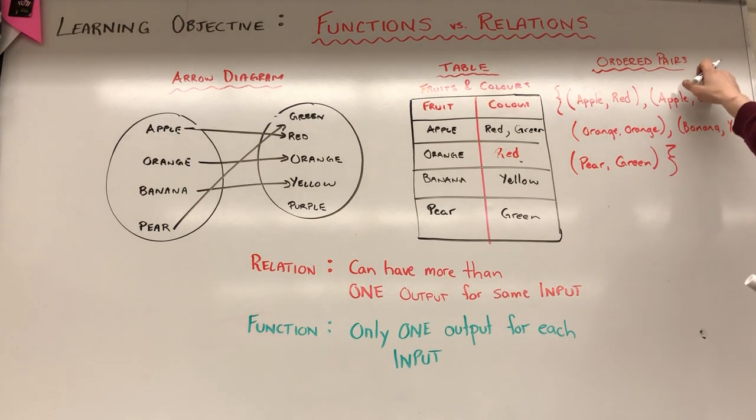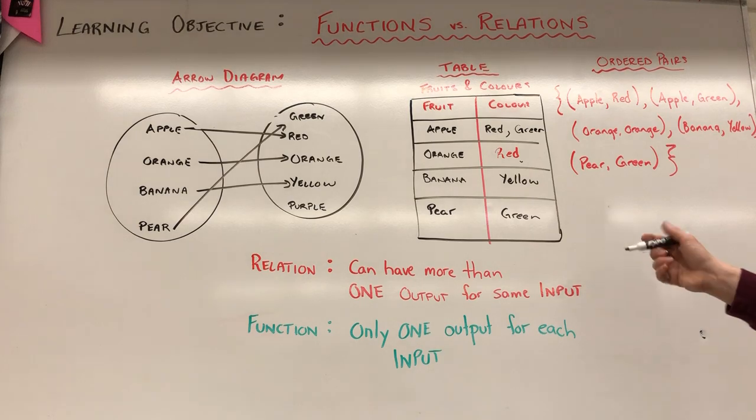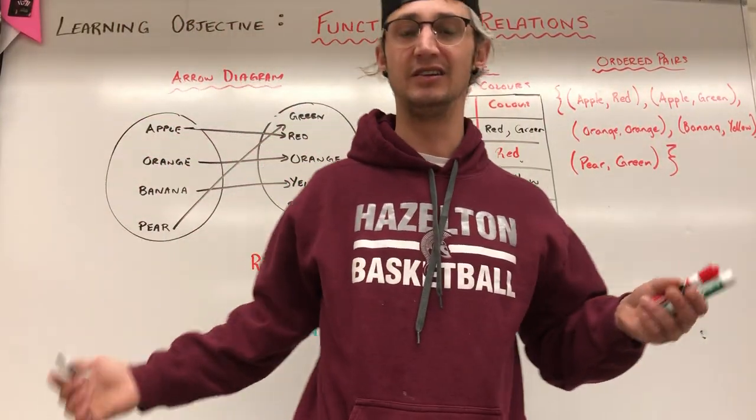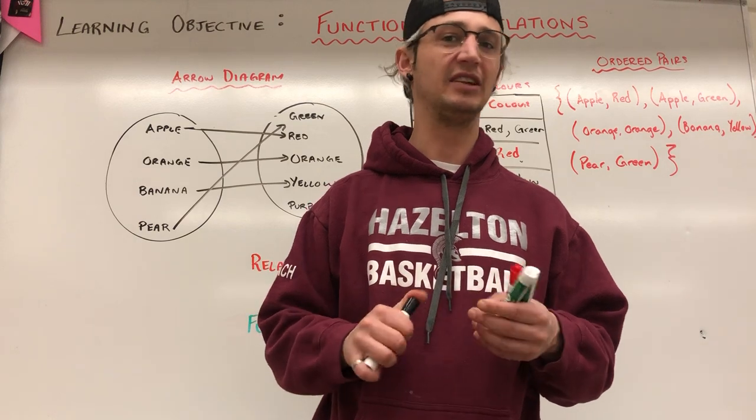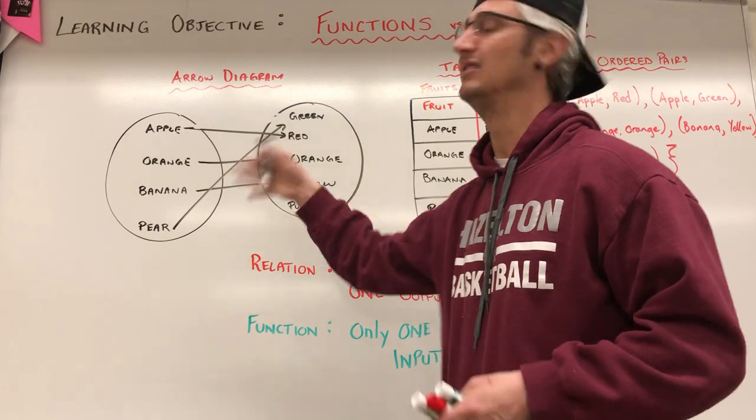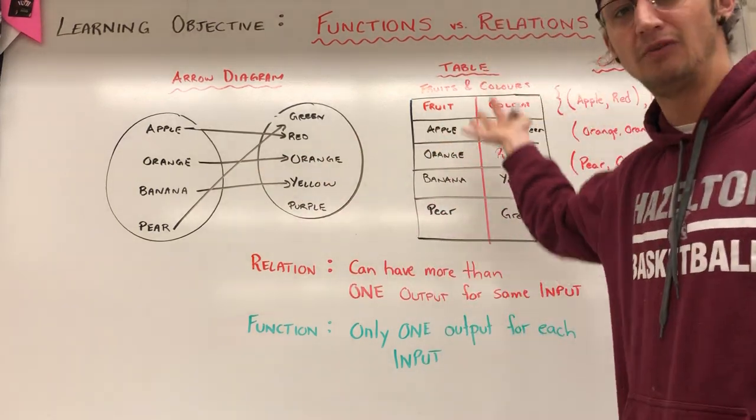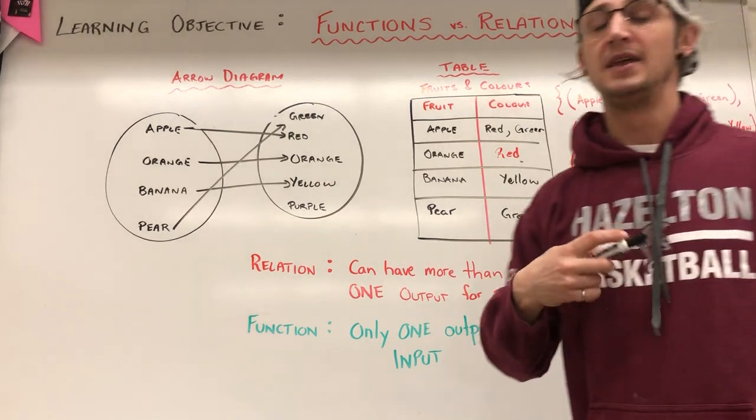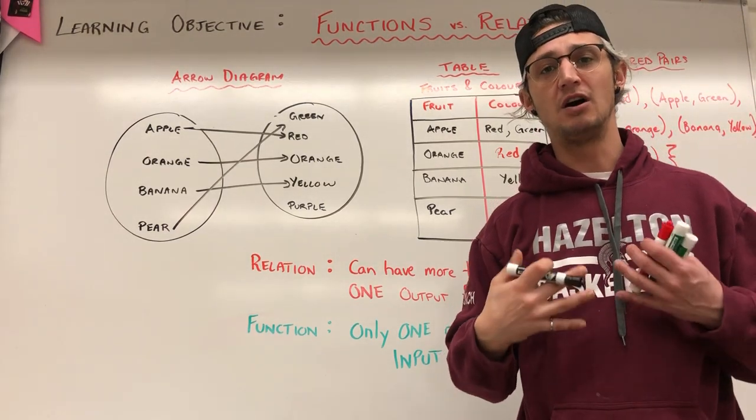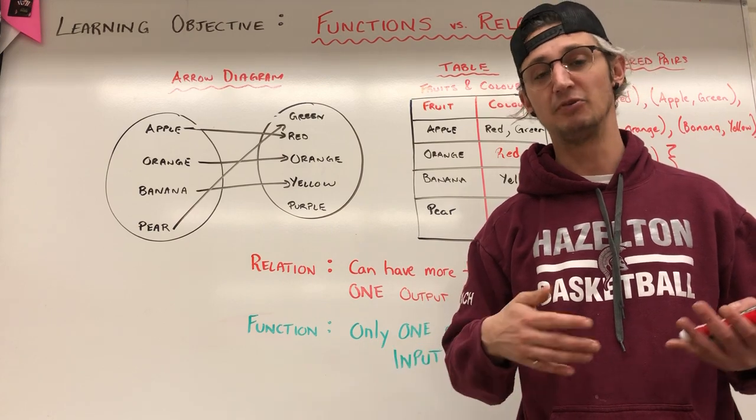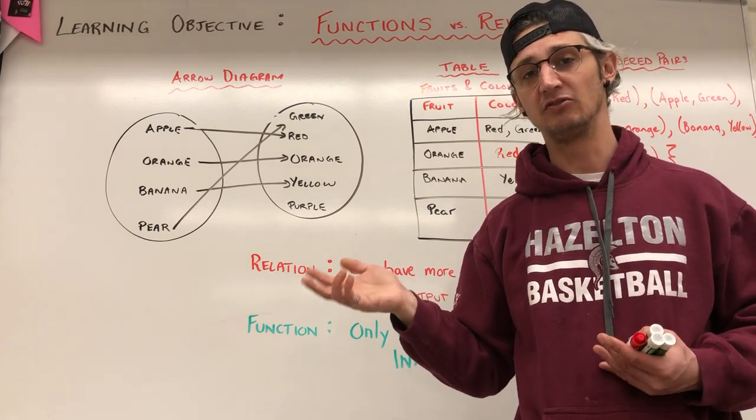And then we can also represent data as ordered pairs. Now full disclosure, the arrow diagram kind of disappears after grade 10 because it's really more for visualizing really simple data. Why use an arrow diagram when we have a table, we have ordered pairs. And in this video, we're also going to talk about the most important, I think, is graphically. Representing functions and relations graphically.